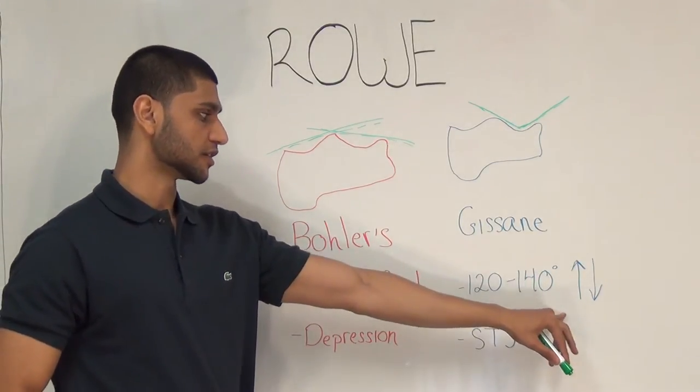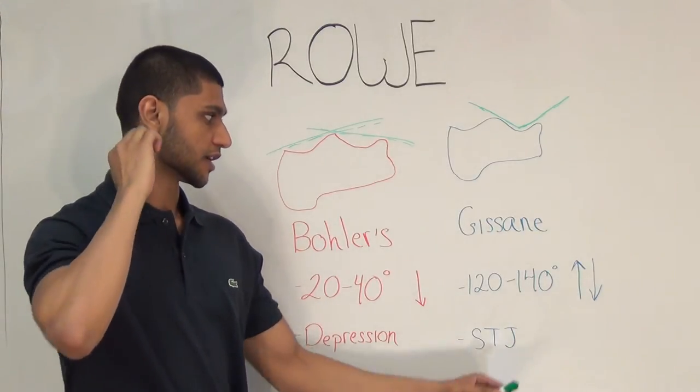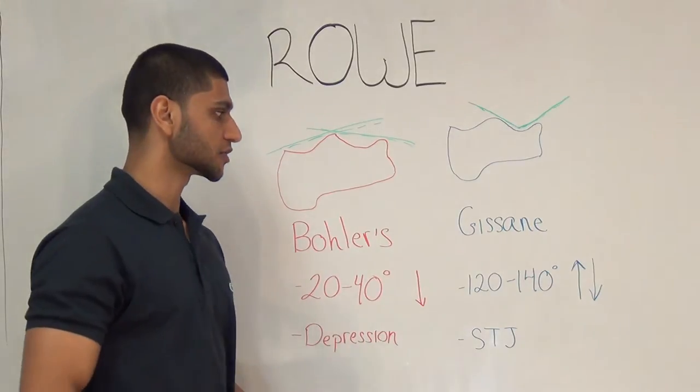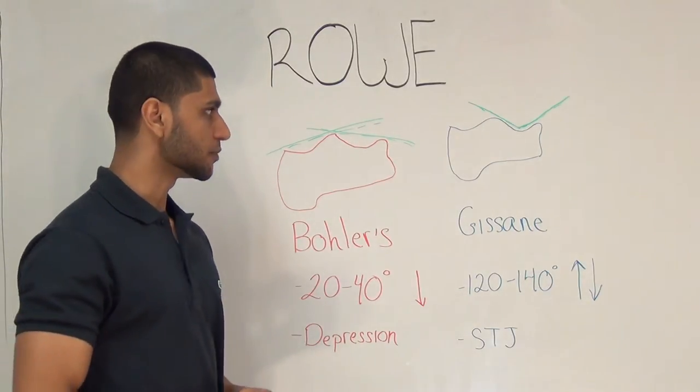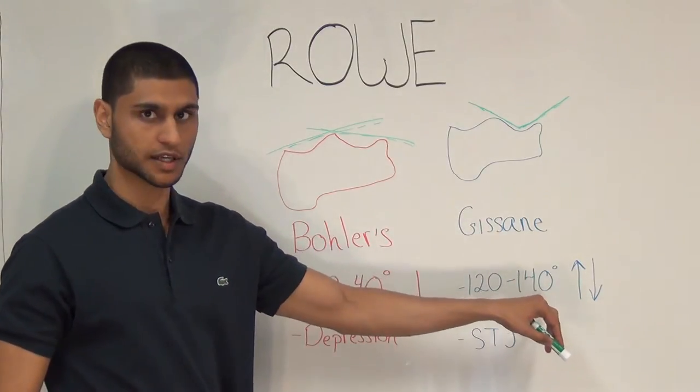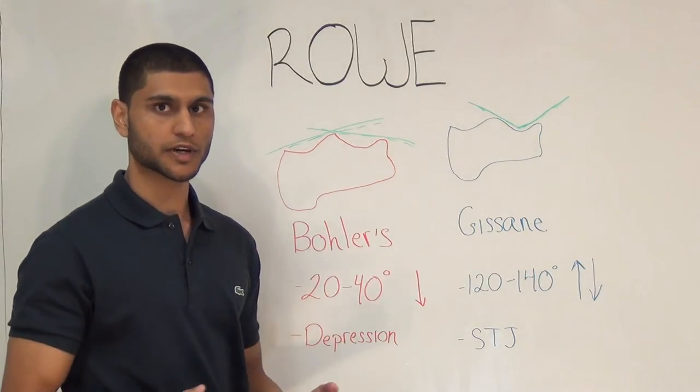Now, I say disruption because depending on what textbook you read, some orthopedic textbooks will say that during a fracture this angle will increase, others will say this angle will decrease. But regardless of what you read, the basic idea to take home is that if there is disruption of this angle, the critical angle of Gissane, that means you have an intra-articular fracture.